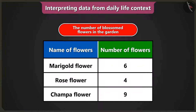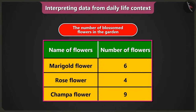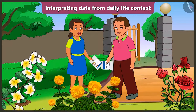Now read the second column. What is the number of flowers? The number of marigold flowers is six, the number of rose flowers is four, and the number of chumpa flowers is nine. The data collected about the number of blossomed flowers in the garden has been shown in this table. Now I will not have to count the flowers one by one. After understanding the table, I have understood which and how many flowers have blossomed in the garden.